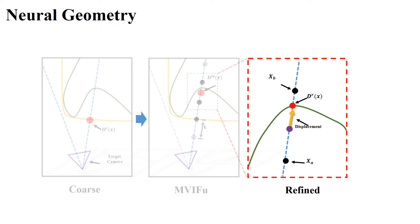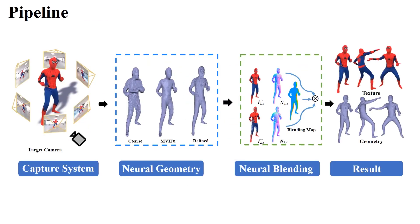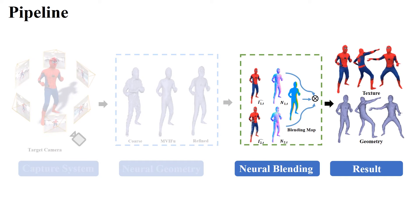We introduce a depth fine-tuning network to predict the displacement of depth values. For the neural blending stage, we introduce a neural blending pipeline to encode more local fine-detailed geometry and texture information from the adjacent input views to produce photorealistic output.